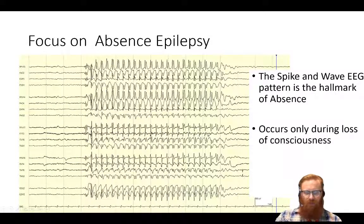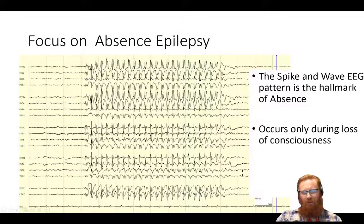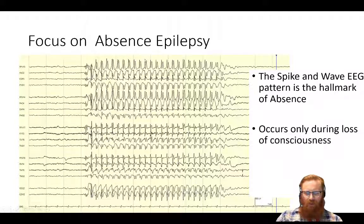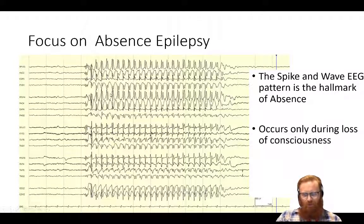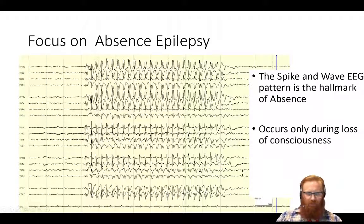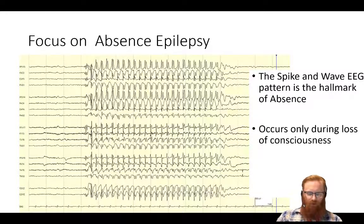This is a real EEG of somebody having an absence event. This one goes for about 10 seconds, and what we see is this very specific EEG hallmark: the spike and wave — a spike in the middle and the wave going around it. This is like EEG Reading 101, it's very easy to recognize. It's completely generalized, in both hemispheres, across all electrodes. The whole brain is essentially doing this, with frontal areas more than occipital areas, but not restricted to any one cortex.